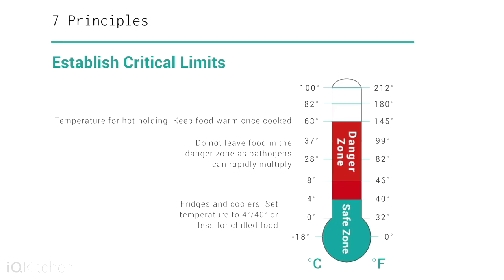Principle 3: Establish critical limits. A critical limit (CL) is the maximum and/or minimum value to which a biological, chemical, or physical parameter must be controlled at a CCP to prevent, eliminate, or reduce to an acceptable level the occurrence of a food safety hazard.